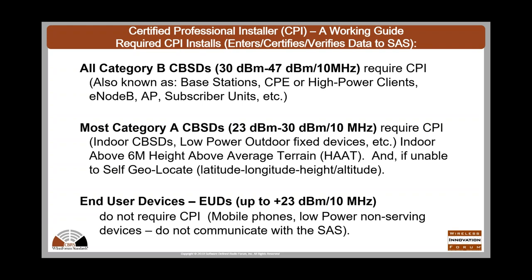The third category is the end-user device, or EUD. This might be a cell phone, a low-power device, or a low-power CPE that is a non-serving device — it interacts with the CBSD rather than serving other CBSDs. It must be 23 dBm or lower per 10 MHz and does not require CPI installation.